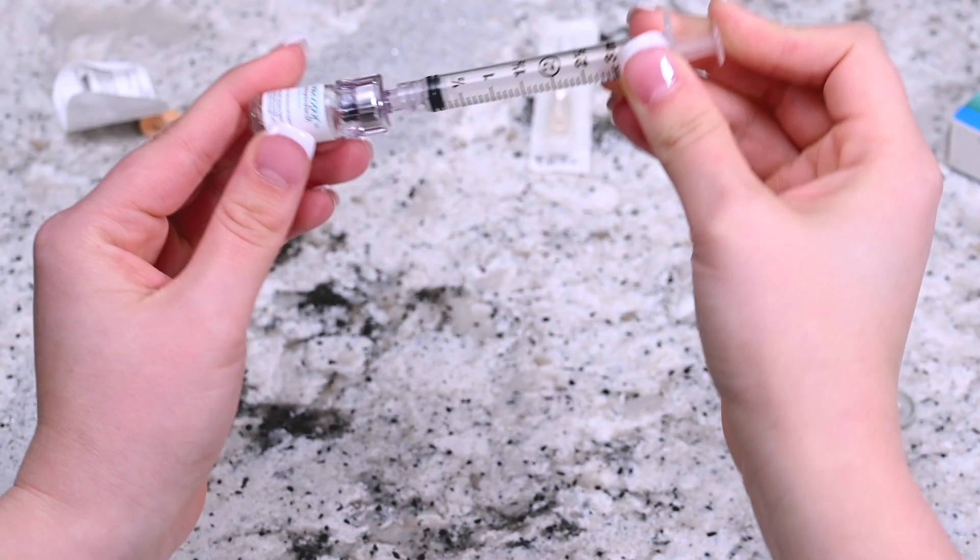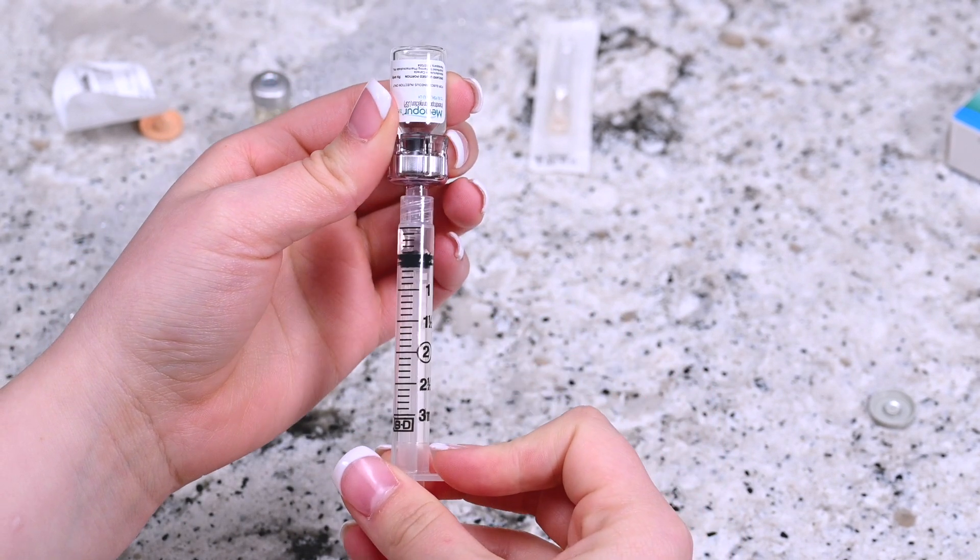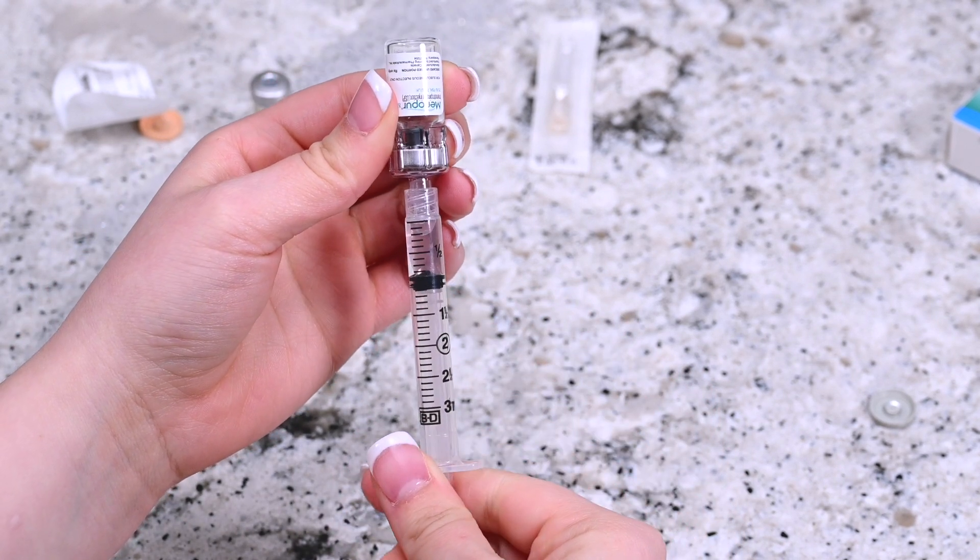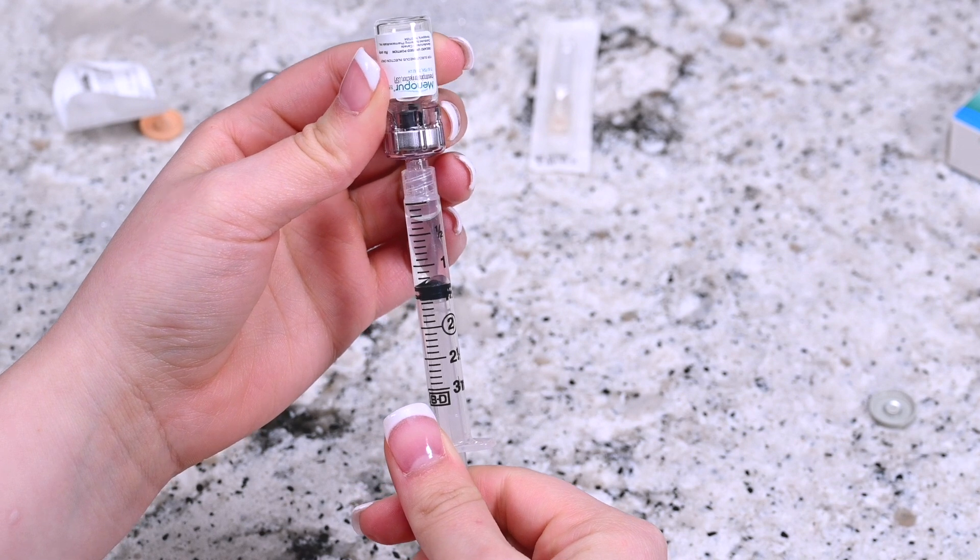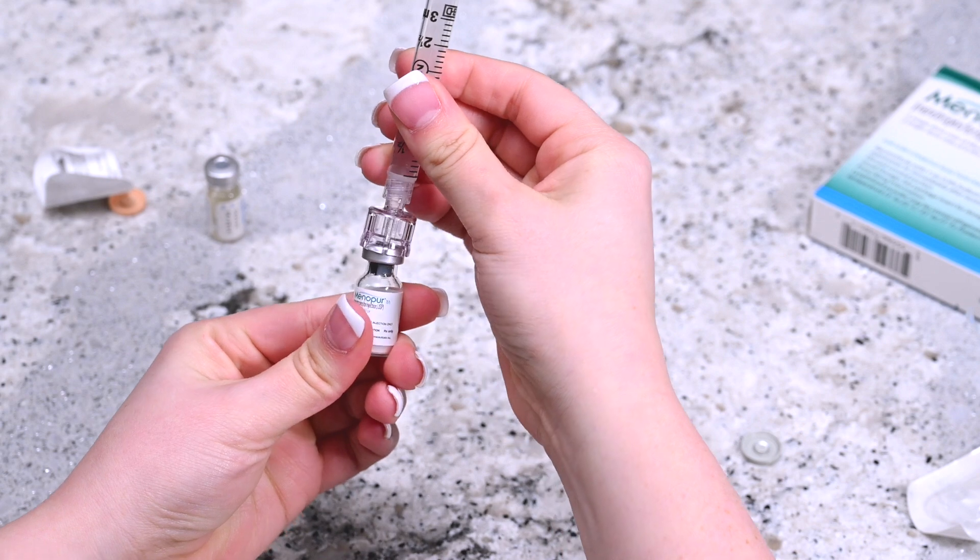Invert the syringe without removing it from the vial and pull the plunger back until all the contents from the vial transfer into the syringe. Remove the now empty vial from the q-cap by gently pulling the vial off the q-cap.